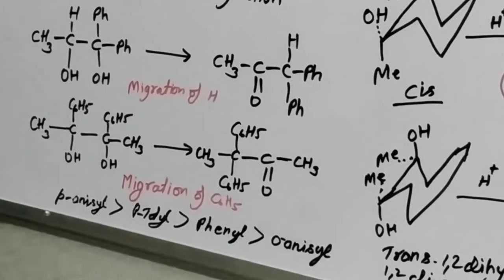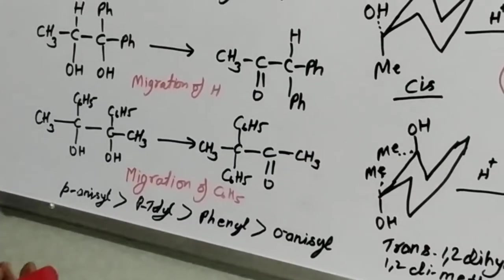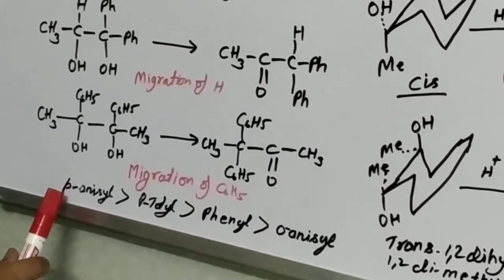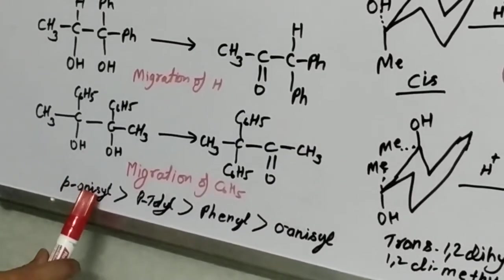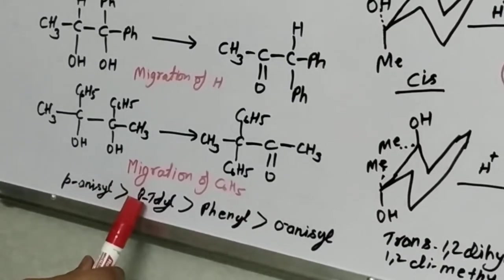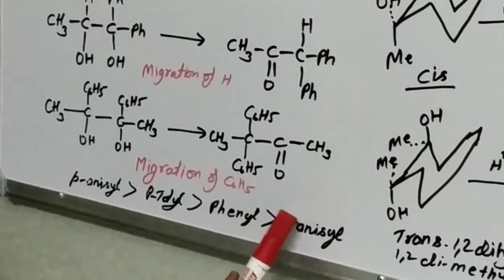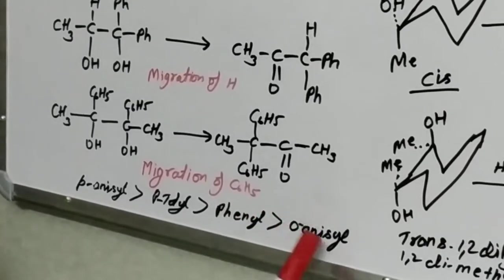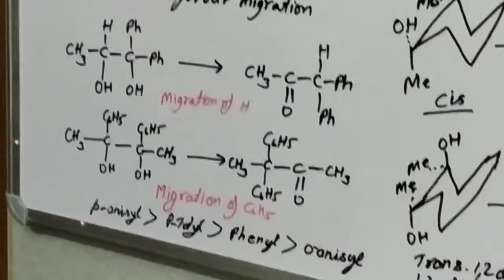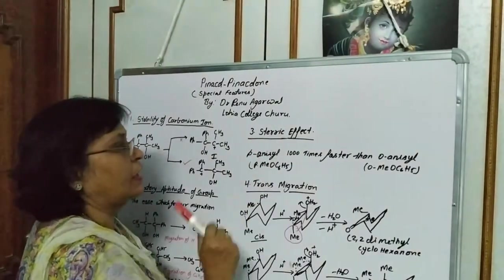If there are different aryl groups, the migratory aptitude of para-anisyl is highest, then para-tolyl, then phenyl, and then ortho-anisyl. That is, ortho-anisyl is lowest in migratory aptitude.